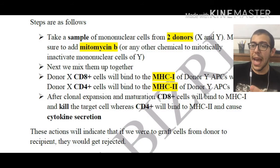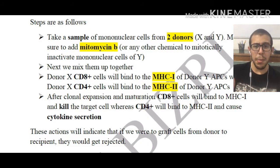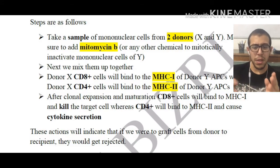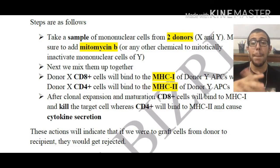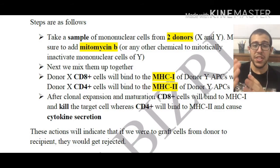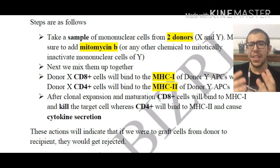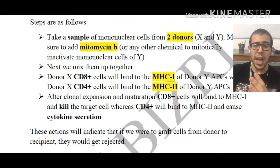After clonal expansion, the cells recognize that there is a problem — these are not self — because they bound to the MHC class 1 and MHC class 2 of donor Y. This is going to be inducing different types of reactions, which we're going to be discussing now.